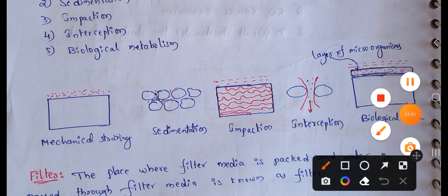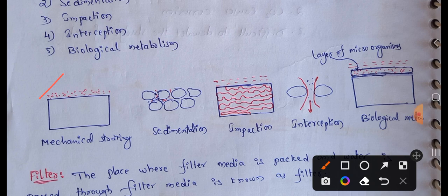First, mechanical straining: particles of suspended matter that are larger in size than the voids in the filter media are arrested and removed by the action of mechanical straining. The filter medium captures suspended particles larger than the void size through this straining action.